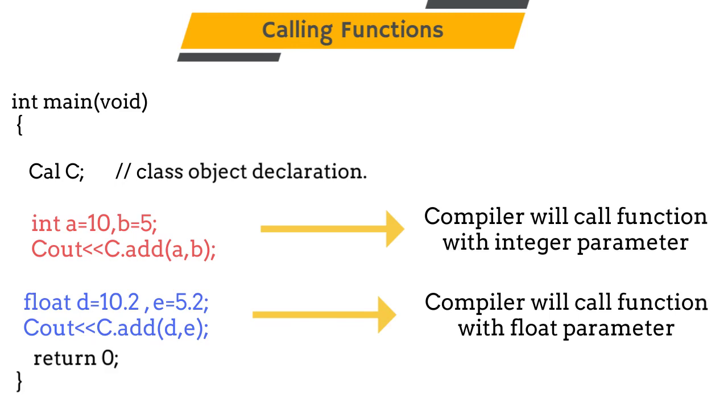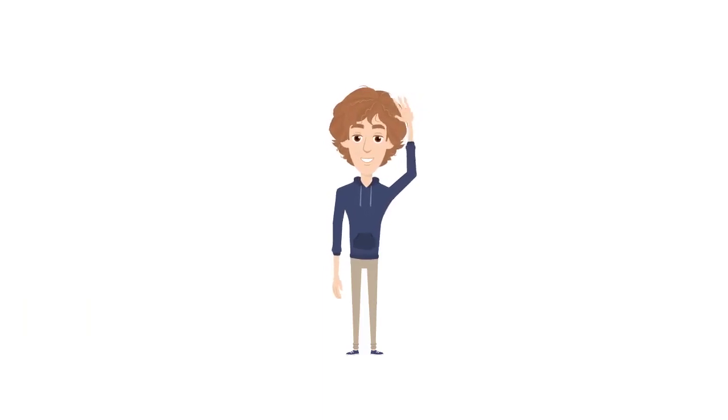So we can say that one function can have multiple forms, which is a type of polymorphism. In the next video, we will learn about method overriding.